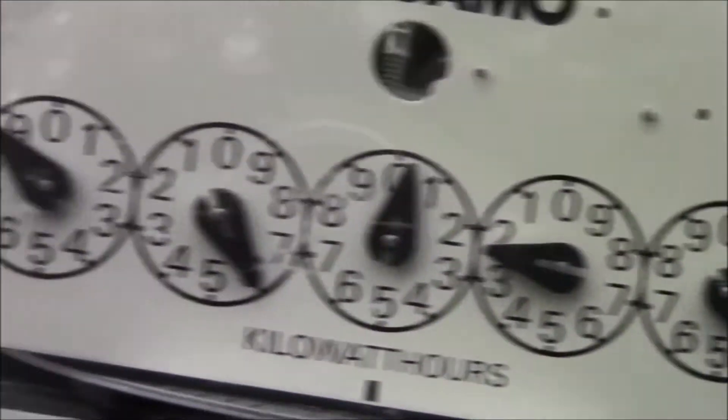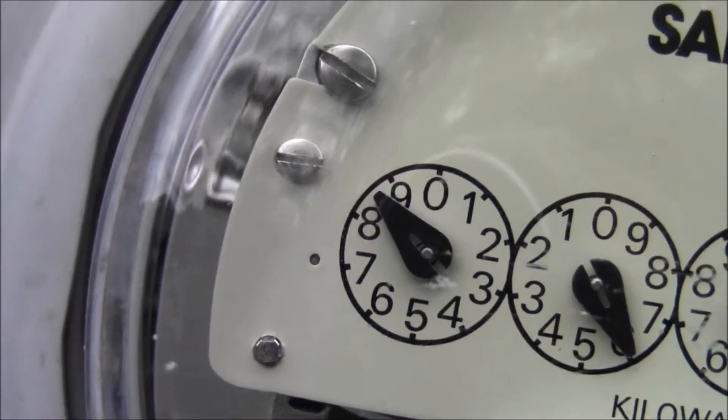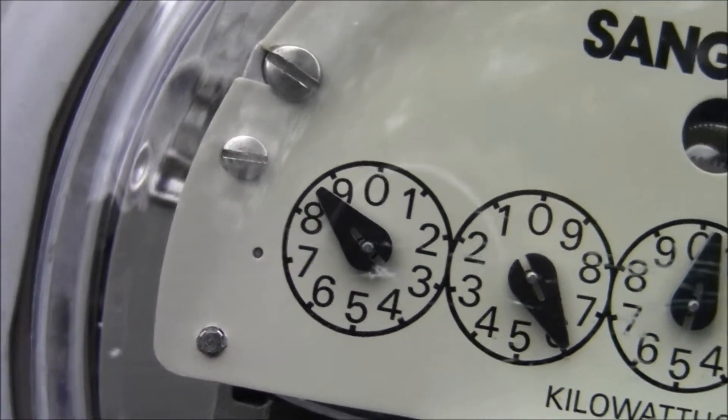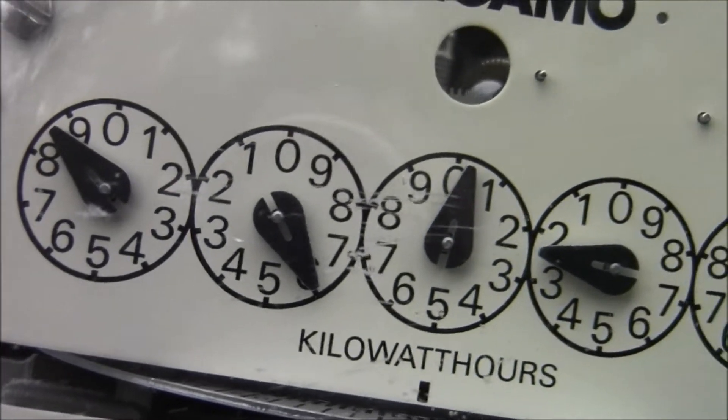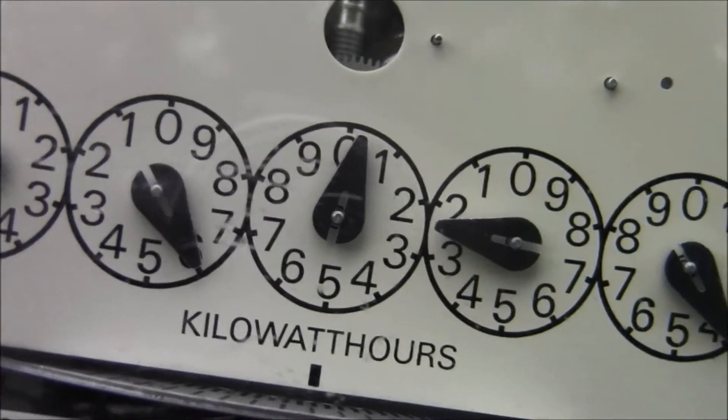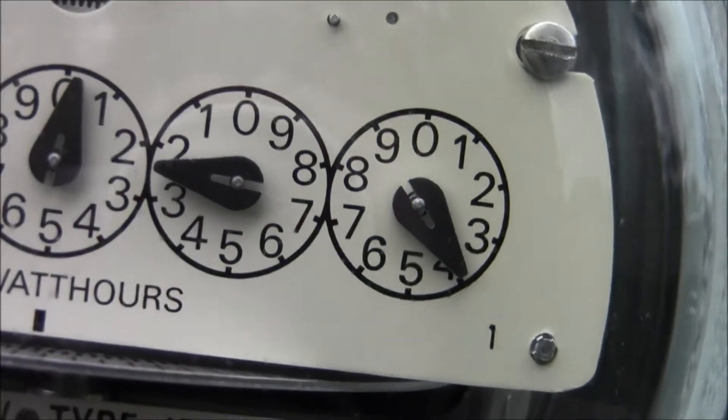And then this one is between the three and the four, so it's a three. So this reads eight, six - eighty-six thousand and twenty-three.